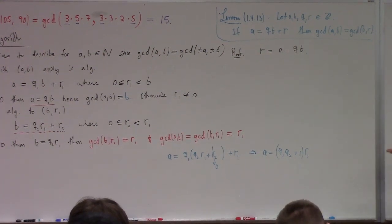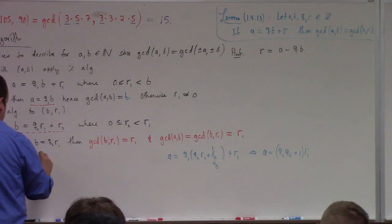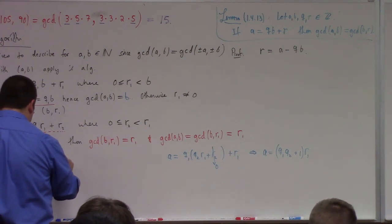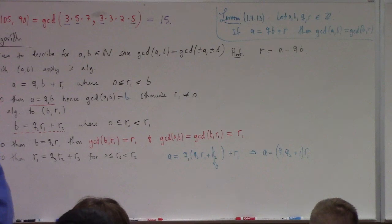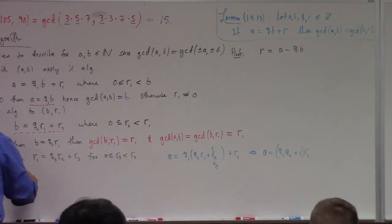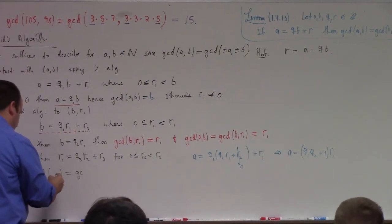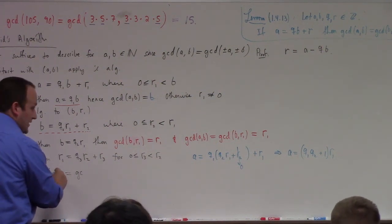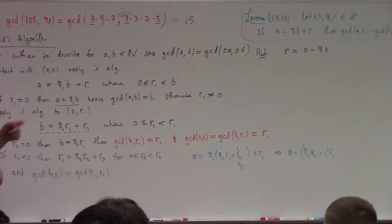What happens if R₂ is not equal to zero? Then we can write R₁ equals Q₃ times R₂ plus R₃ for 0 ≤ R₃ < R₂. Again, we can argue that GCD(A, B) equals GCD(B, R₁) equals GCD(R₁, R₂), and this just keeps going until eventually you get zero.